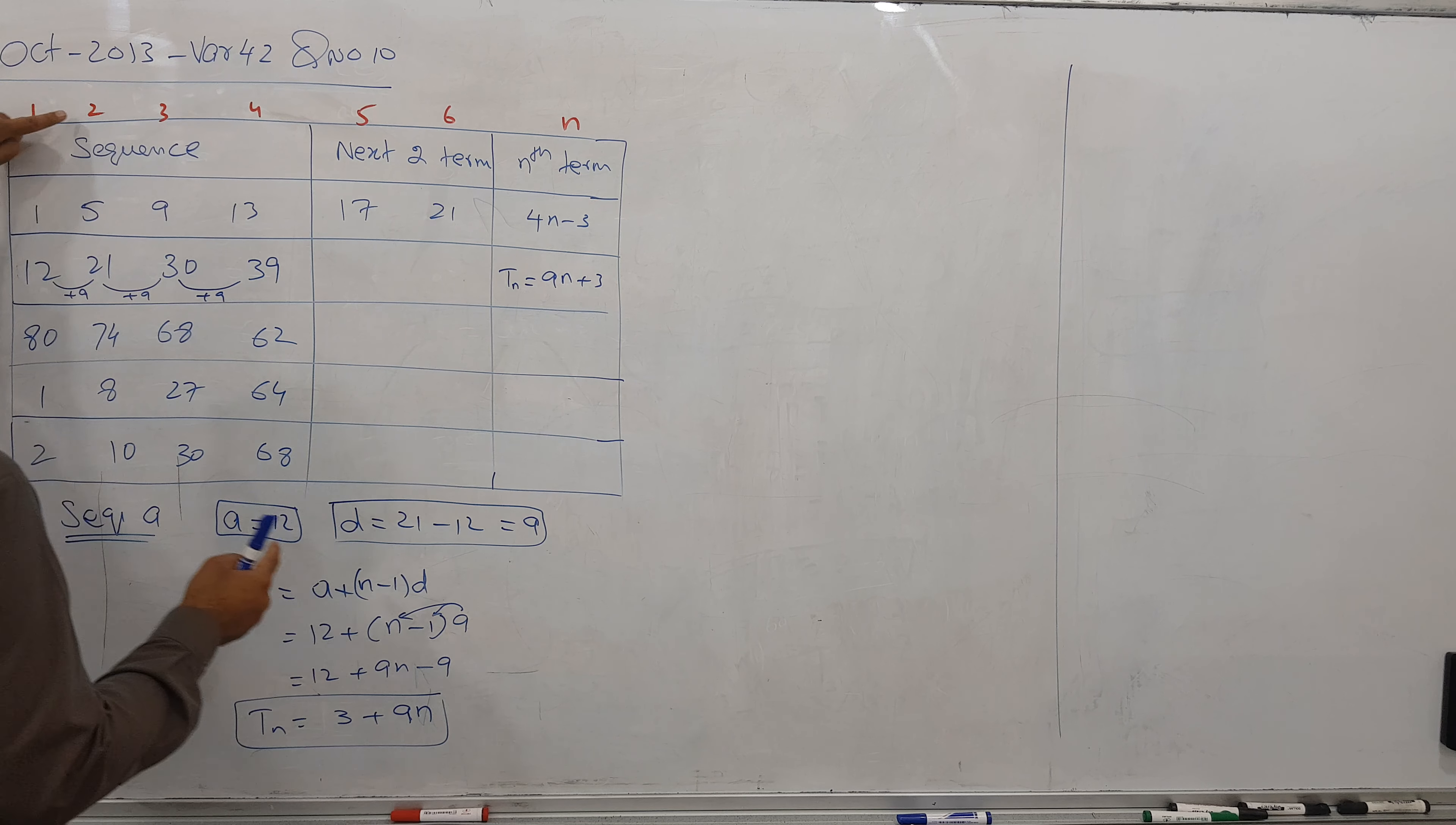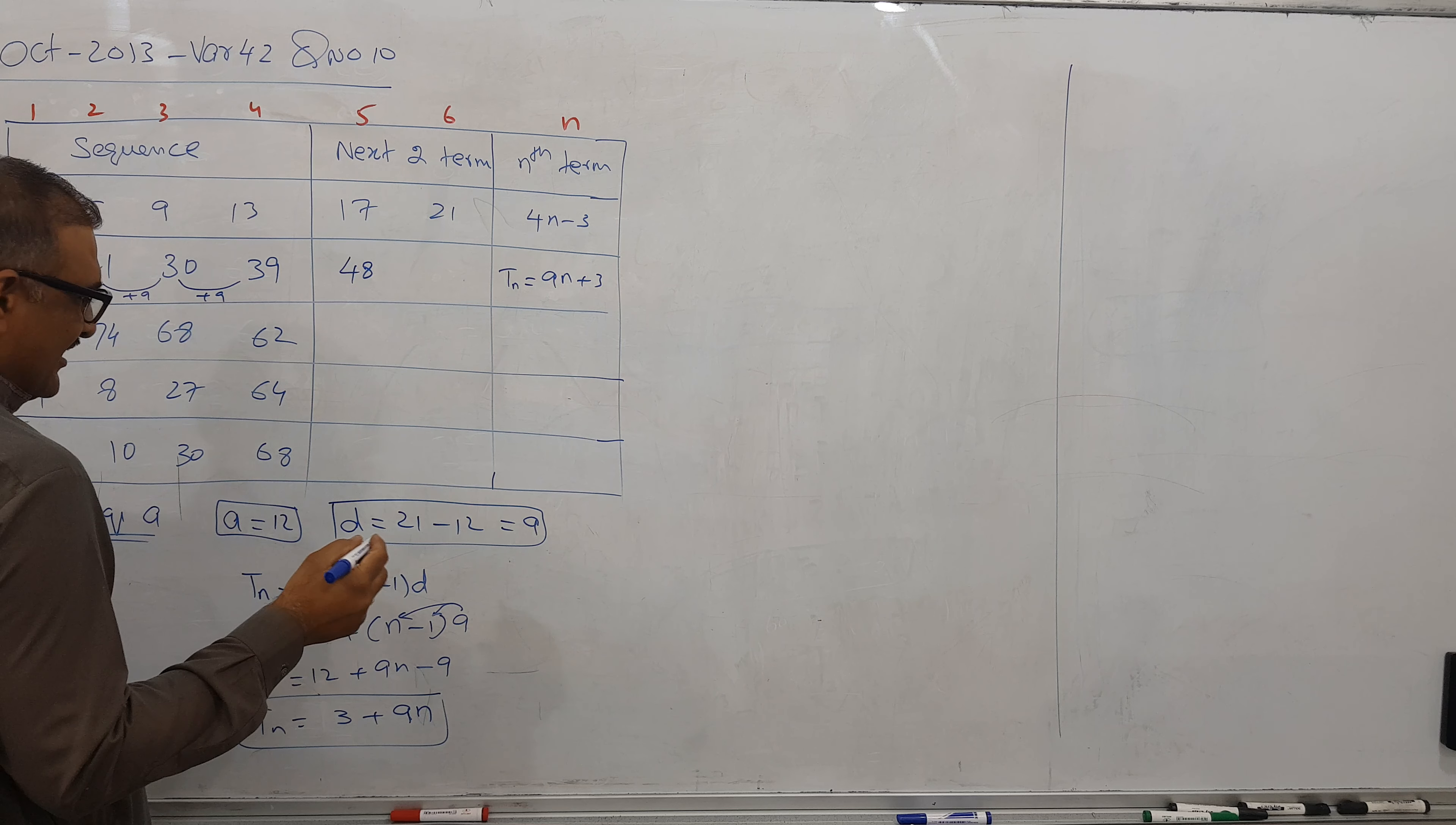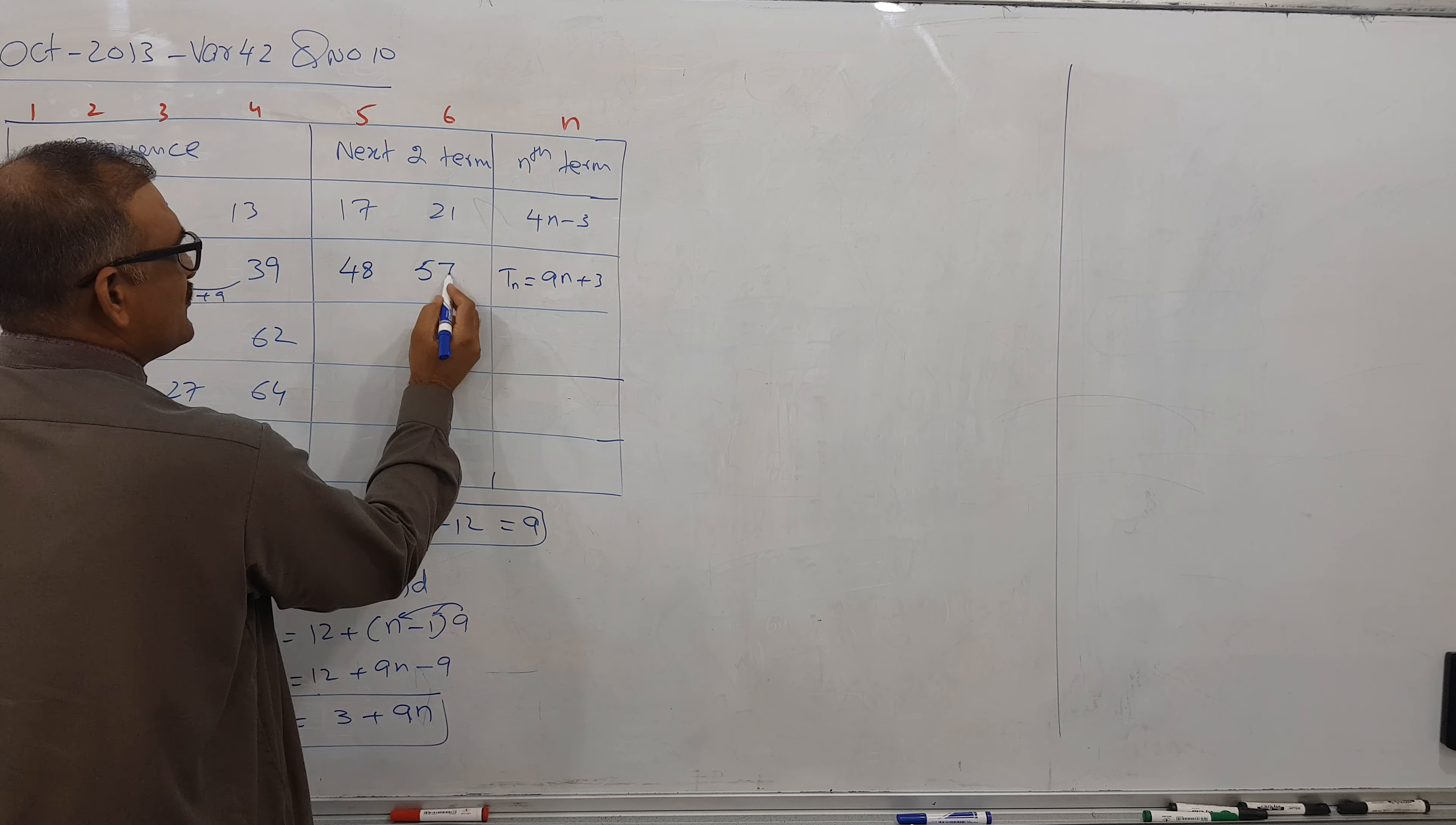Put 5 here. For example I take this 2 here, 2 nines are 18, 18 and 3 is 21, match. It means for this 5, so 5 nines are 45, 45 and 3 is 48. And now I can get this next one easily. 48 plus 9, if you put 6 term here, 6 times 9 is 54, plus 3 is 57. So we got the answer.